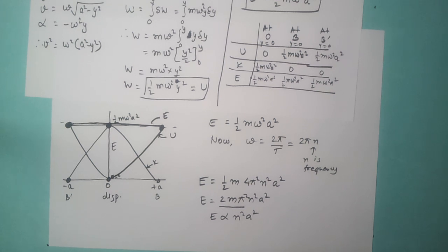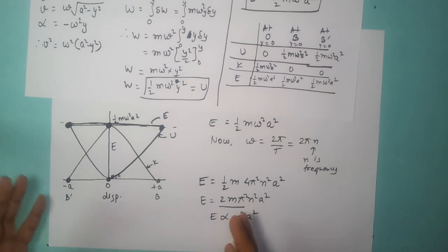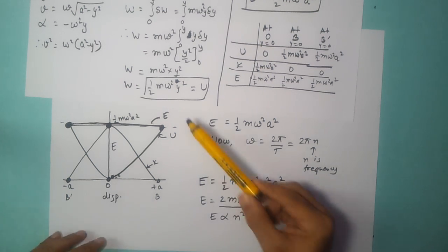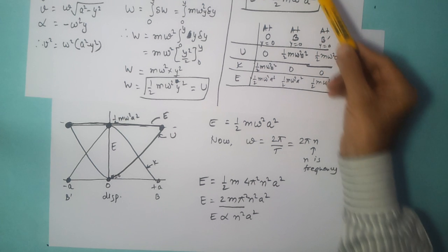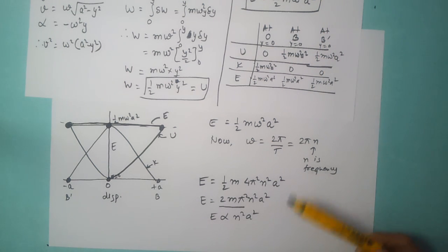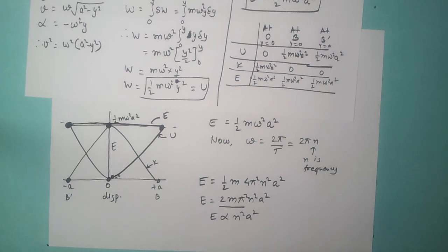This means a small increase in amplitude causes total energy to increase rapidly by the square. Similarly, if frequency increases — meaning it completes more oscillations — energy increases as well. This important relationship between frequency, amplitude, and energy applies in various waveforms; in sound waves, for example, if the amplitude increases the intensity of sound increases. So potential energy is half m omega squared y squared, kinetic energy is half m omega squared a squared minus half m omega squared y squared, and total energy remains half m omega squared a squared.